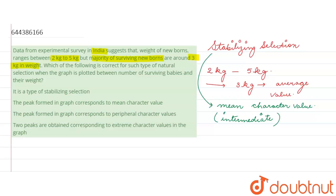So from 2 kg to 5 kg, our 3 kg weight babies are the average value or the intermediate values. Therefore, when the graph is plotted against the number of surviving babies and their weight, the peak that will be obtained will give us the intermediate weight that is 3 kg.